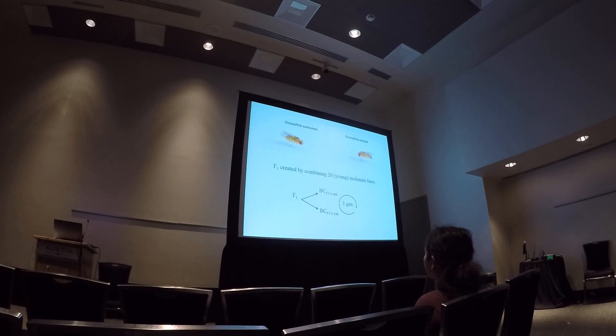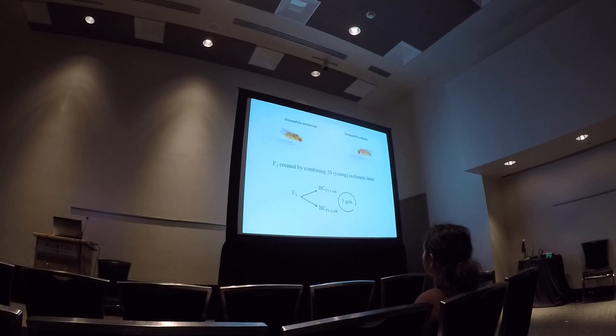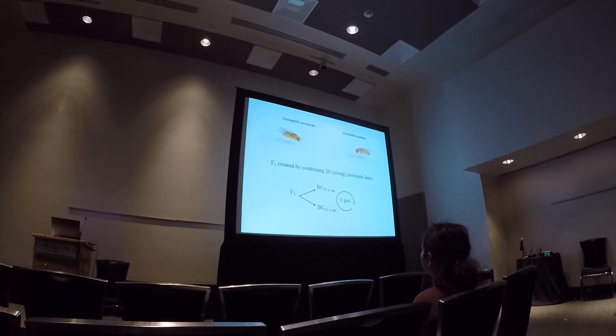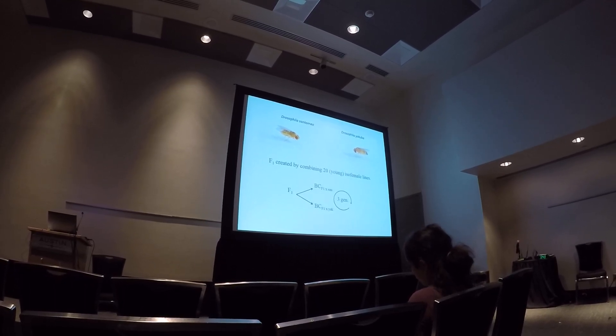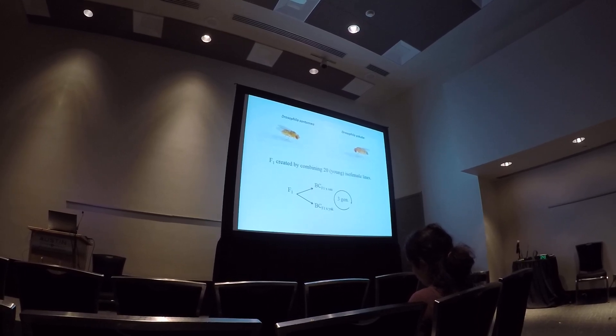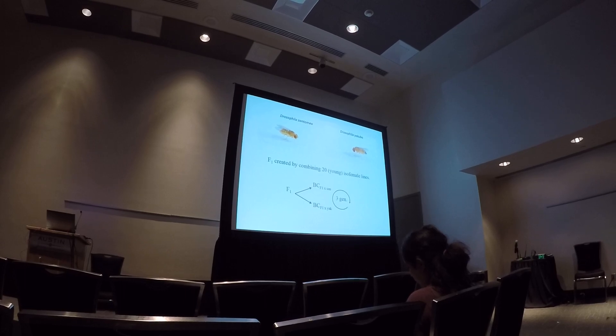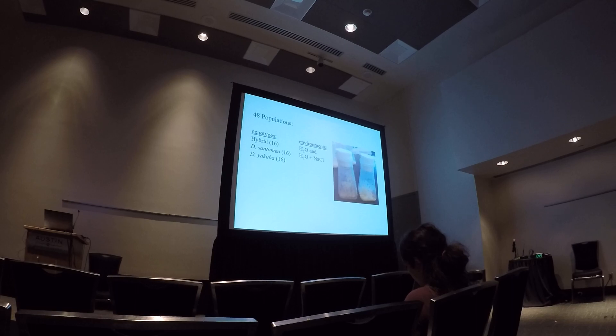And so, just quickly to show you how we created these hybrid populations. Because F1s are sterile, I took F1s and then backcrossed them to both parentals and then allowed these backcrossed groups to interbreed for roughly three generations to get some admixture and then used those to start the experiment as my hybrids. We also confirmed that they were indeed hybrids using some low coverage genomic sequence.